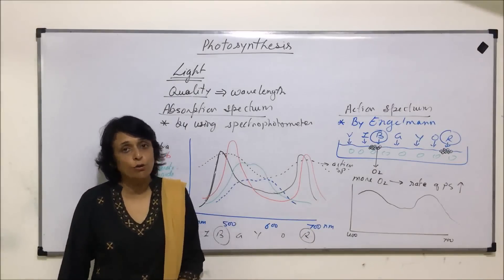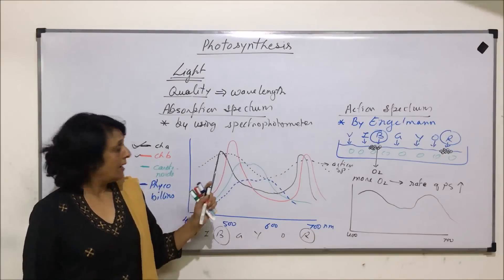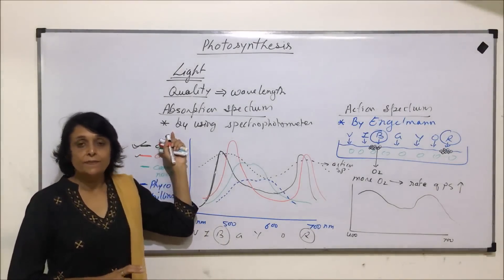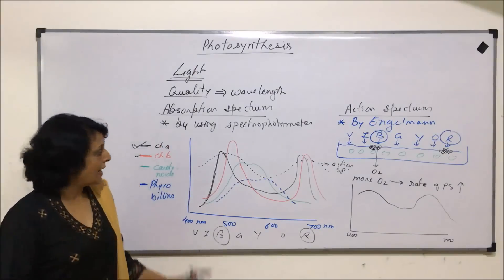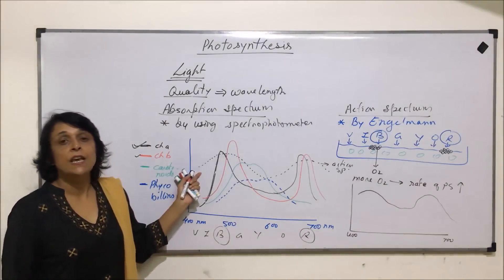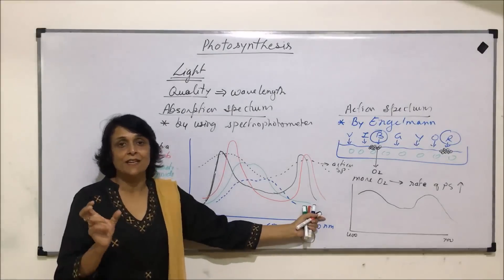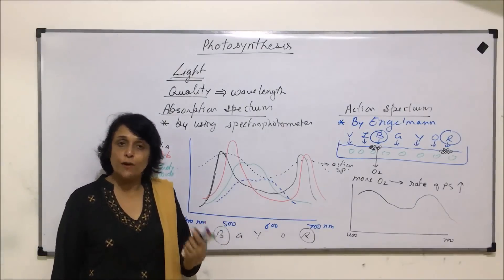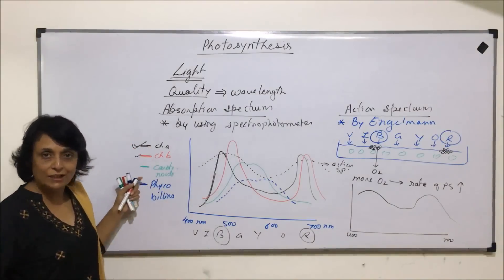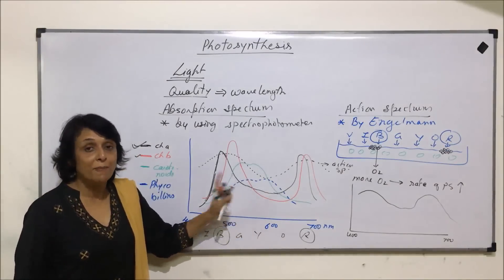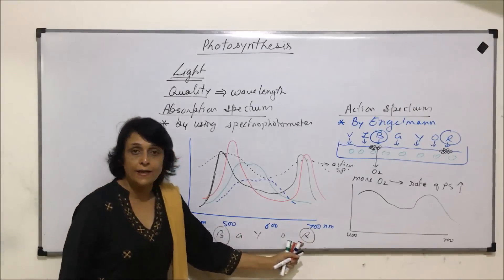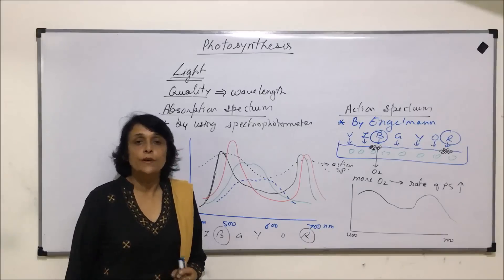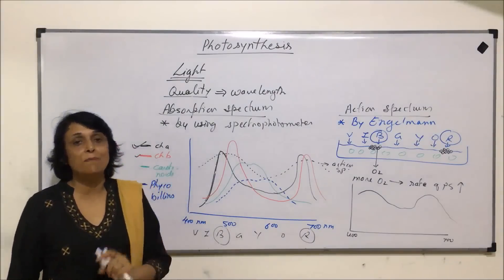These two things — absorption spectrum and action spectrum — help us conclude that chlorophyll A is the main chlorophyll, which is why we call it the reaction center chlorophyll. When we talk of light as a factor in photosynthesis, we require visible light. When broken into its spectrum of seven colors, two wavelengths — blue and red — are maximally absorbed, mainly by chlorophyll A followed by other pigments. This helps us understand which quality of light is essential for photosynthesis.